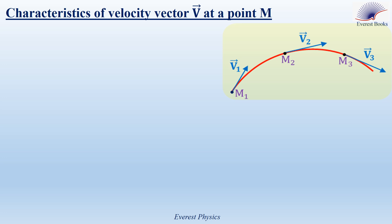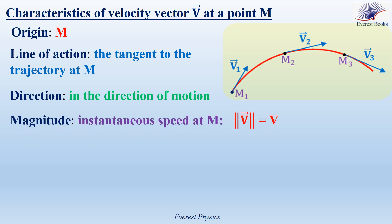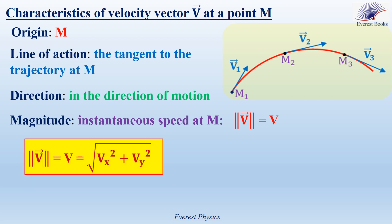Let's move to the characteristics of the instantaneous velocity vector at a point M. Consider a particle moving on a curved path, shown at three positions M1, M2, and M3. Generally, if the particle is at position M, the origin of its velocity vector is the point M itself. The line of action is the tangent to the trajectory at M, and the direction of the velocity vector at any position is in the direction of the motion. The magnitude of the instantaneous velocity vector is the instantaneous speed at that point. Since the velocity vector equals VX i plus VY j, its magnitude is equal to the square root of VX squared plus VY squared.